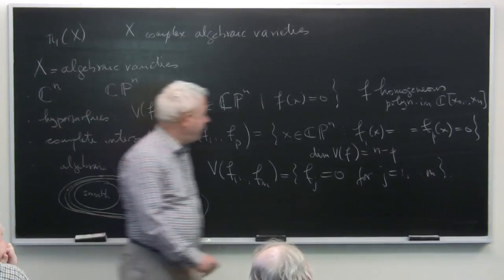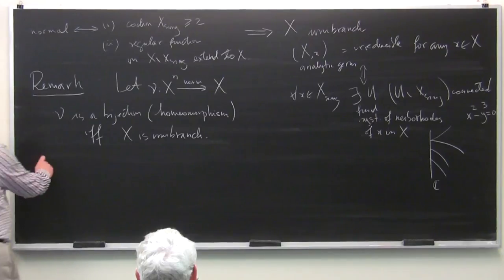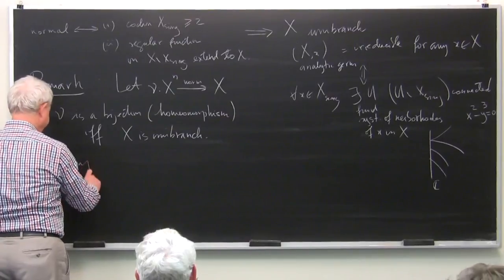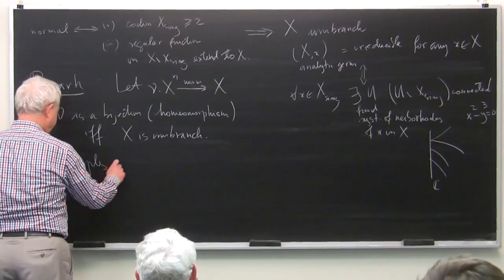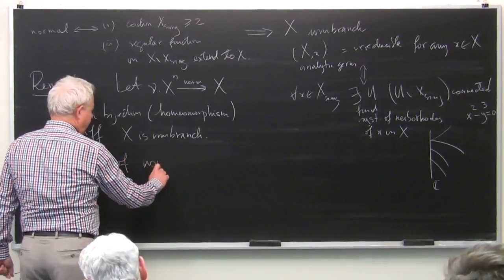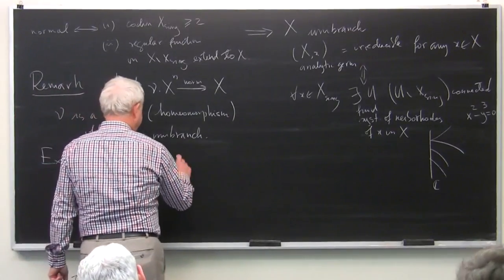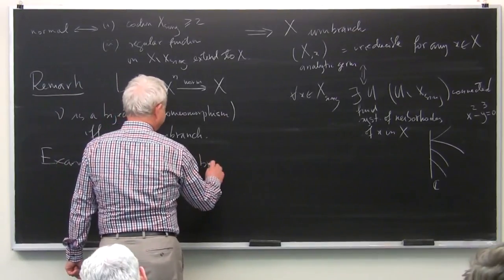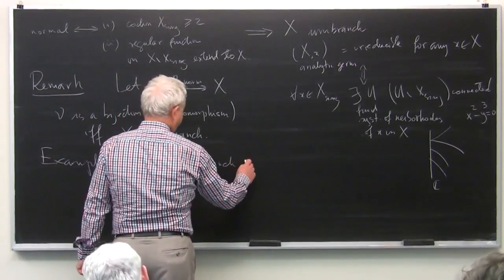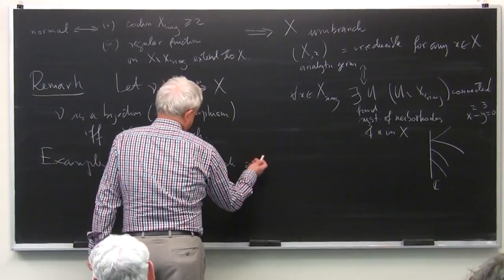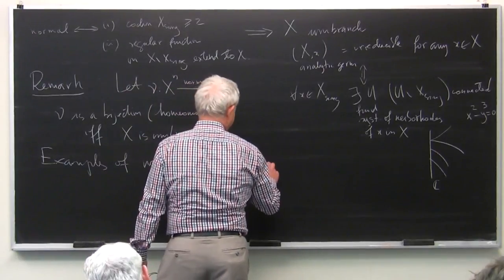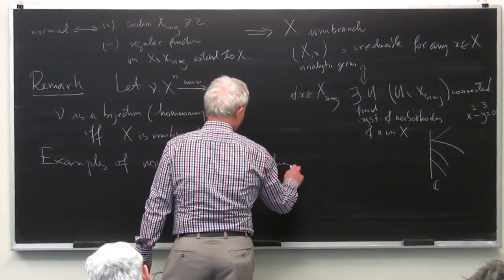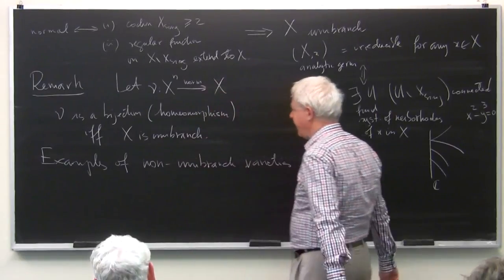The fiber of the normalization morphism consists essentially of the irreducible branches of the analytic germ. So from a topological point of view, we have just the same class of varieties. Some other examples of non-unibranch singularities: first of all, there are the normal crossings — where 'normal' has nothing to do with normal variety, it just means ordinary crossing.